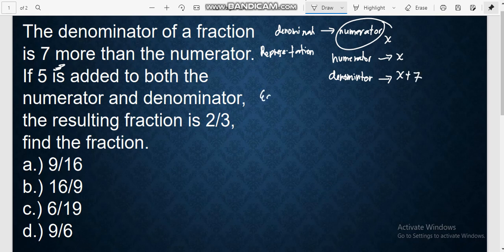Now, let's have the equation. If 5 is added to both numerator and denominator, the resulting fraction is 2/3. So you have the numerator and the denominator. When 5 is added to both, the resulting fraction is 2/3. This is our equation.